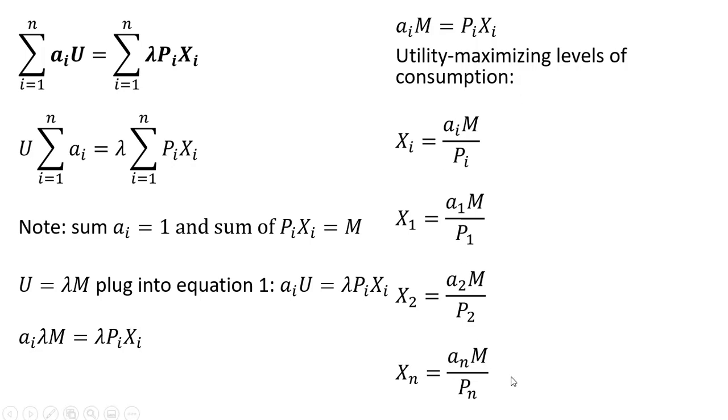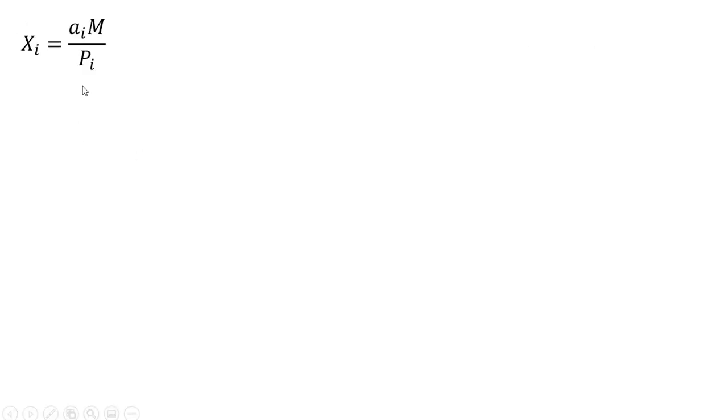So that's the Marshallian demands. Let's get the indirect utility function now. So we're going to take this equation and plug it into our utility function. So here's our utility function, and we're going to make a substitution now.